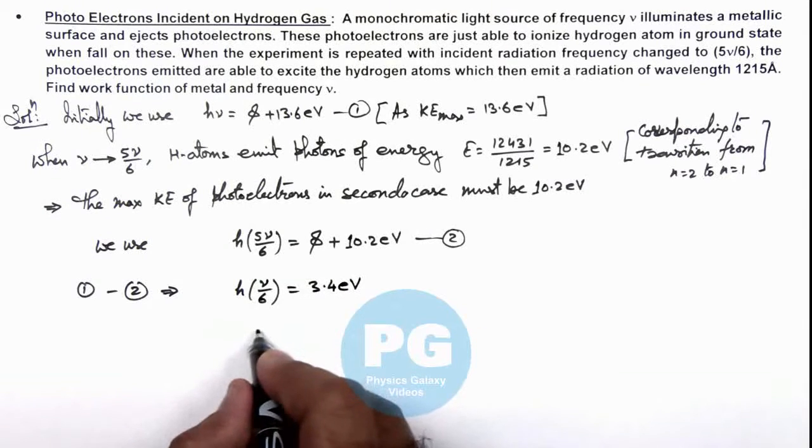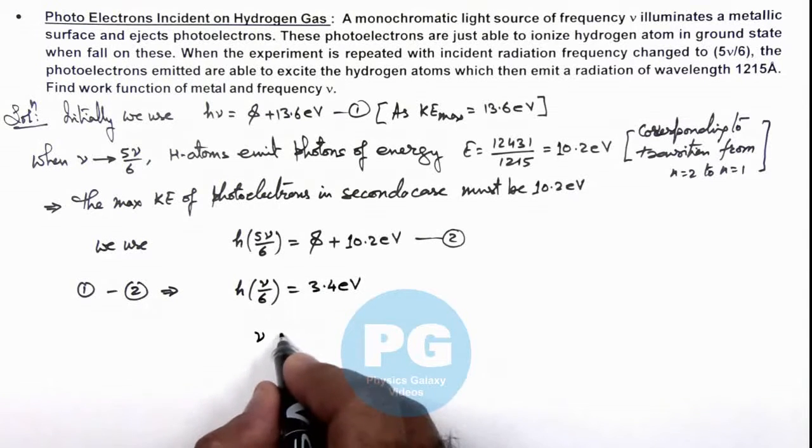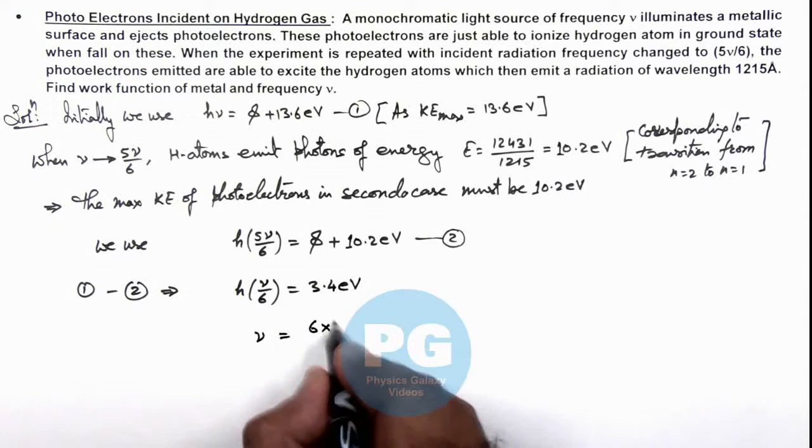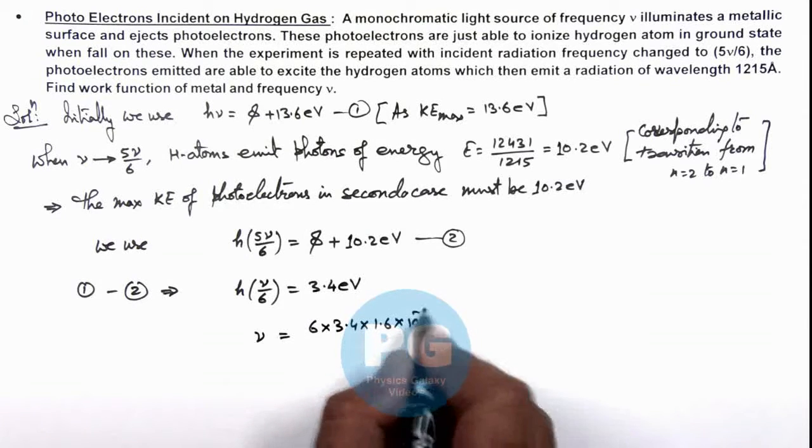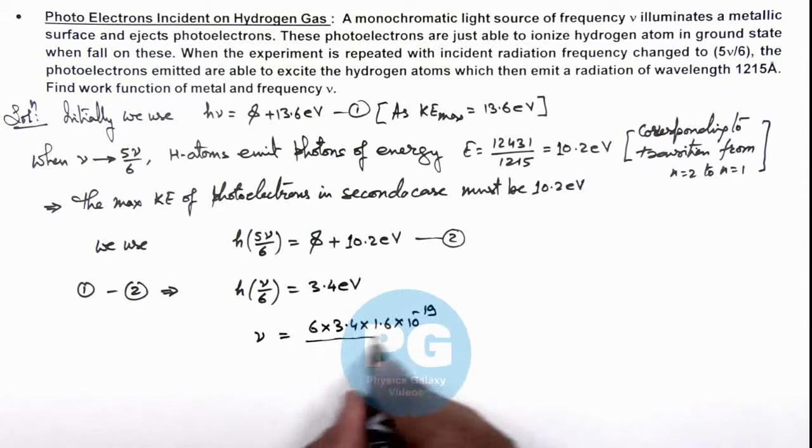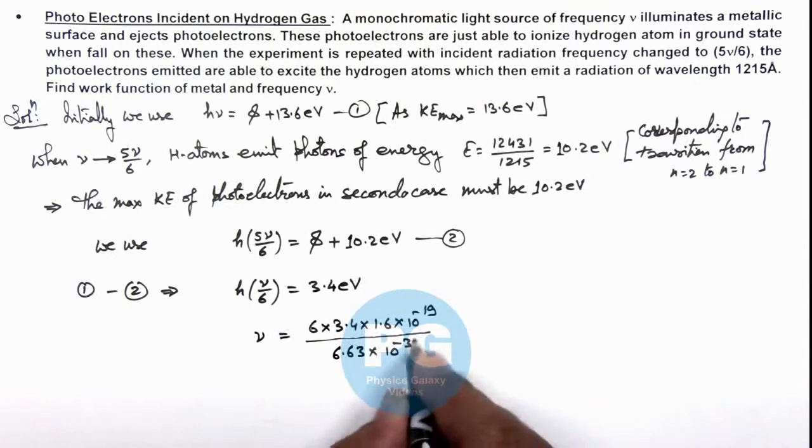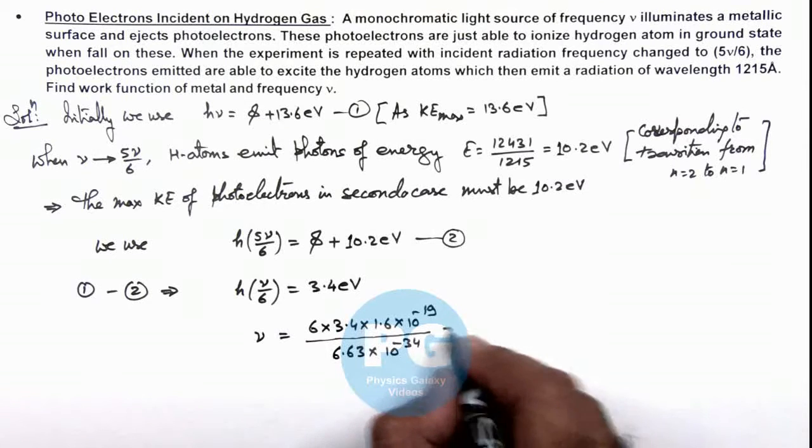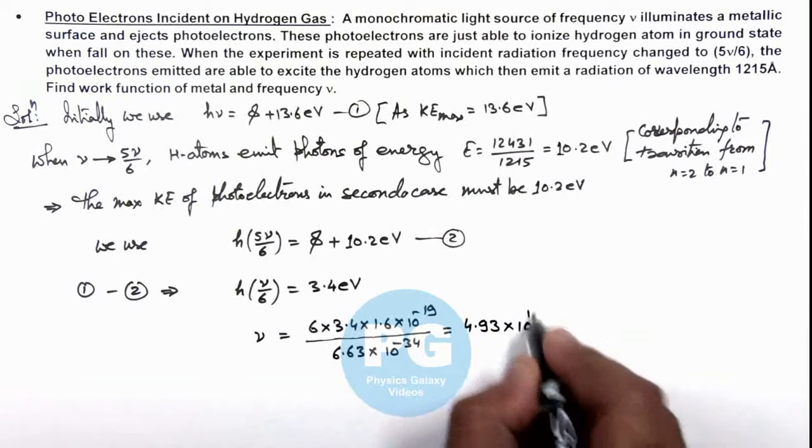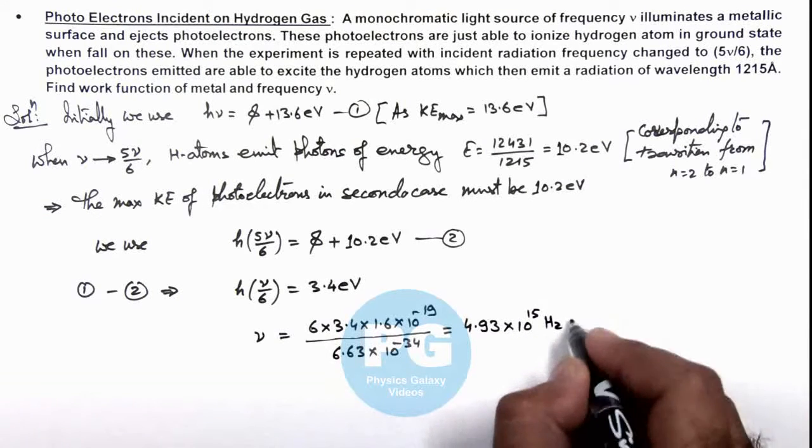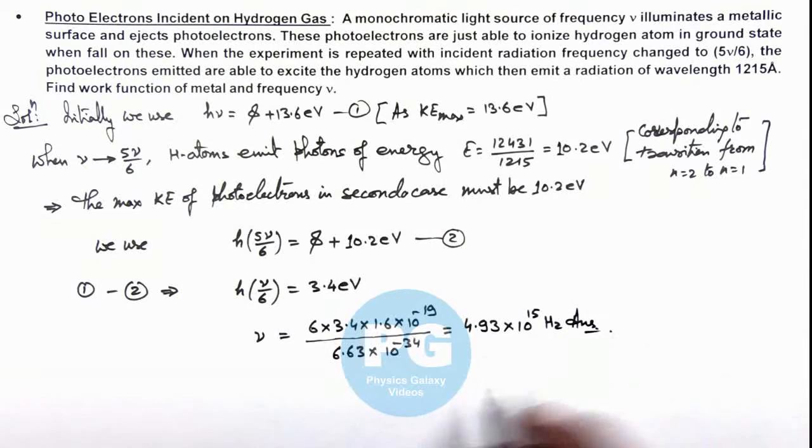And on simplifying this gives us the value of ν, that is 6 × 3.4 × 1.6 × 10^(-19) divided by the value of h is 6.63 × 10^(-34), and this becomes 4.93 × 10^15 hertz. That is one result of this problem, that is the frequency ν.